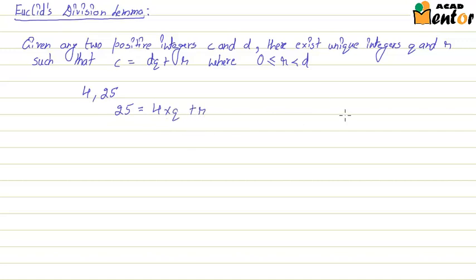In order to find Q and R, we'll divide 25 by 4 and we'll get a quotient of 6 and remainder of 1. So 25 becomes 4 multiplied by 6 plus 1.